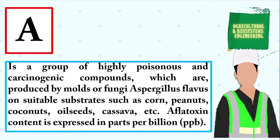A group of highly poisonous and carcinogenic compounds which are produced by molds or fungi Aspergillus flavus on suitable substrates such as corn, peanuts, coconuts, oilseeds, cassava, and more. Its content is expressed in parts per billion. The answer is: aflatoxin.